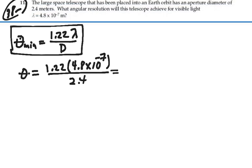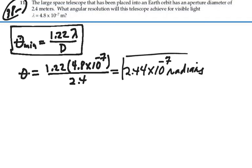So that is going to be 2.44 times 10 to the minus 7, and this will be in radians. So that is our minimum angle of resolution.